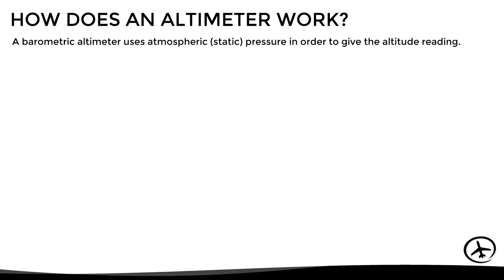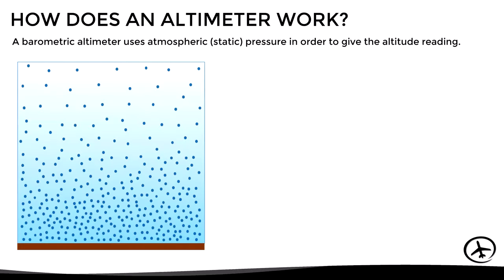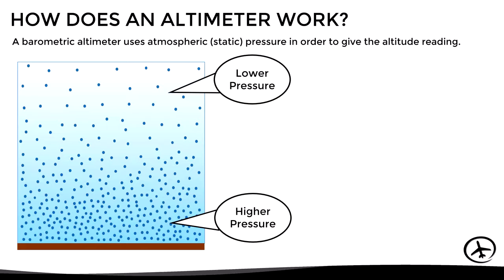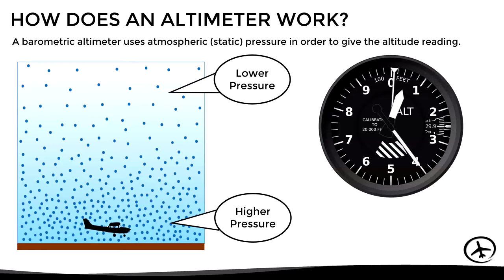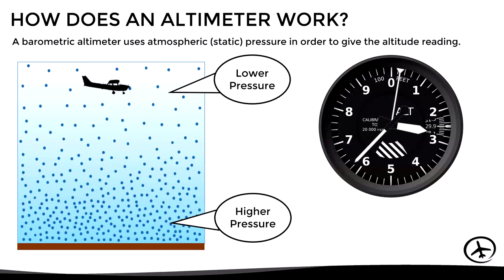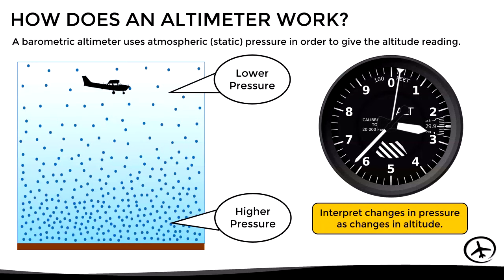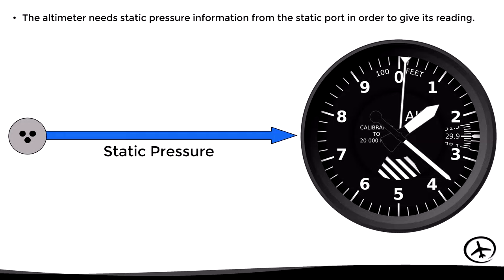The barometric altimeter uses static pressure, or in other words atmospheric pressure, to determine altitude. It takes advantage of the fact that static pressure decreases with altitude. Therefore, if the altimeter senses a high static pressure it will interpret that the aircraft is flying at a low altitude, and if it senses a low static pressure it will interpret that the aircraft is flying at a high altitude. The barometric altimeter interprets pressure changes as altitude changes.